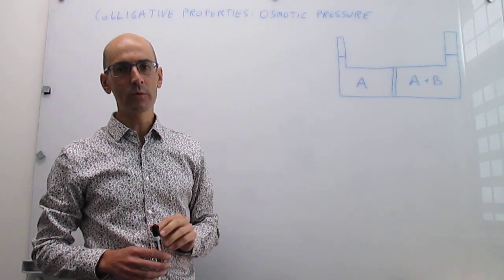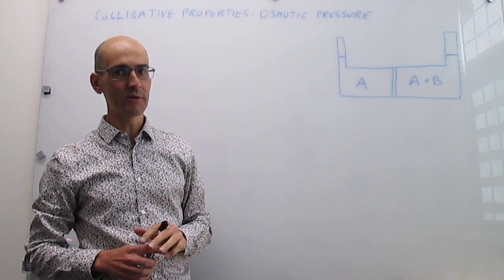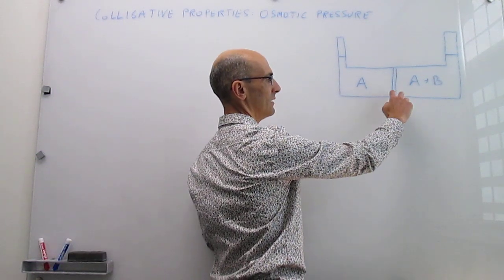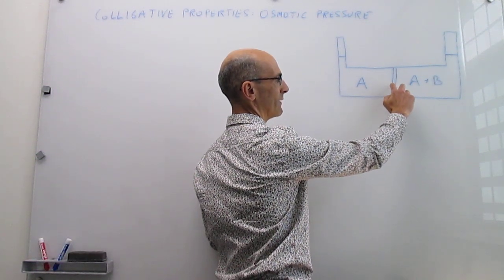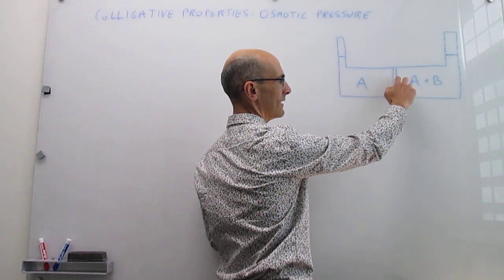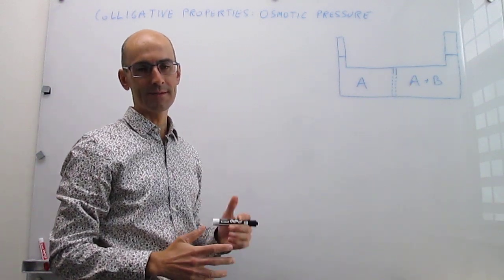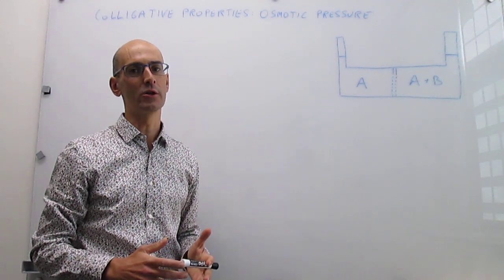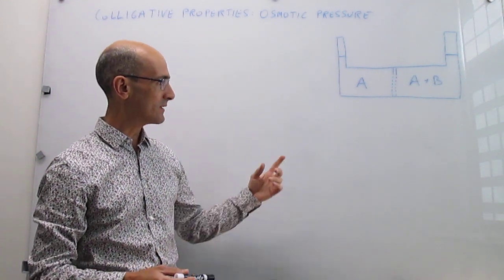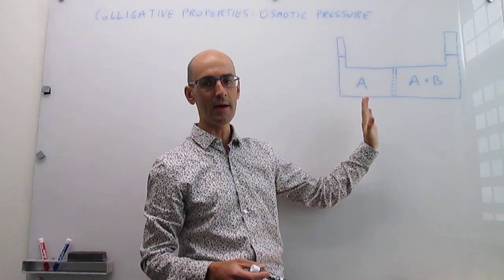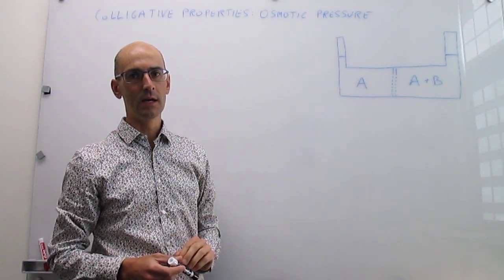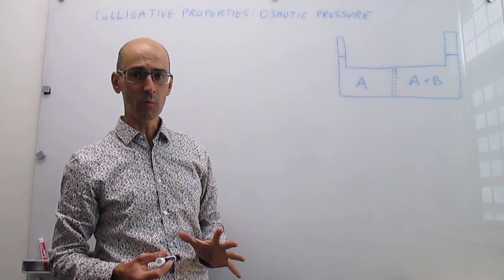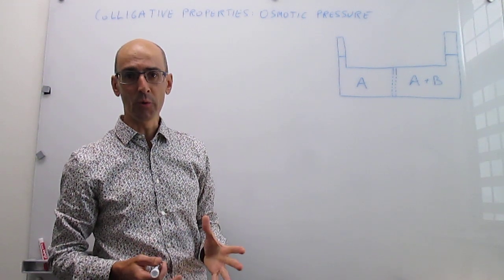What we do next to experience osmotic pressure is simply replace this wall by a semipermeable membrane, which only allows for the passage of solvent but does not allow for the passage of solute. So the solvent can flow left to right or right to left, but the solute B cannot. This is what we call osmotic pressure.